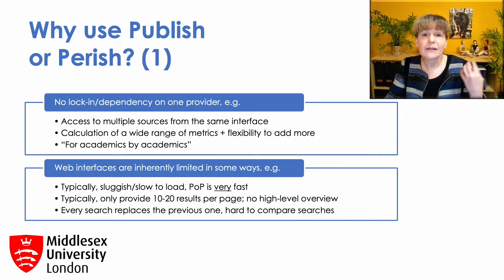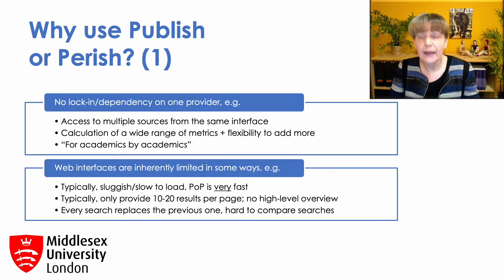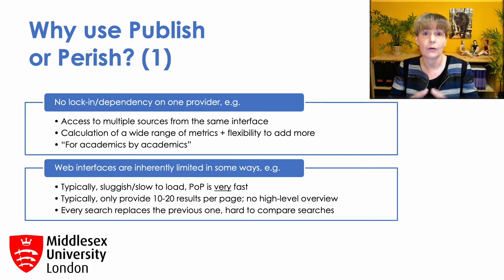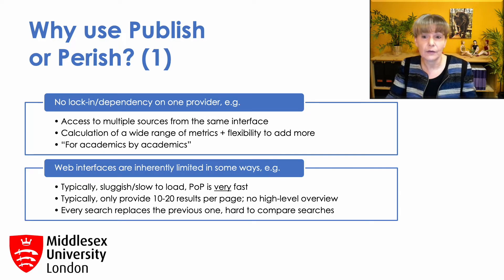Publish or Perish also calculates a much wider range of metrics than the other data sources. Most of the web interfaces are run by commercial companies, and they provide only a limited number of metrics, typically only publications, citations, and sometimes the H-index. As a user, you typically have little influence over what they are offering, and there's usually little opportunity to provide feedback or suggest new features. Publish or Perish is developed by academics for academics. We know what type of analysis academics are interested in and for what purposes. We also listen to users if they suggest new features, and hundreds of new features have been added over the last 15 years.